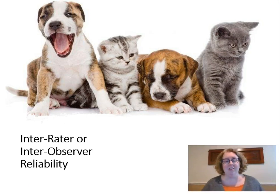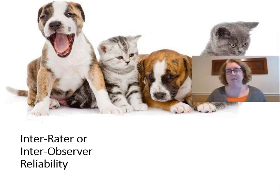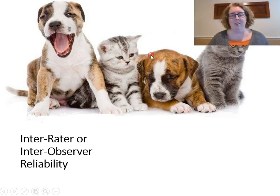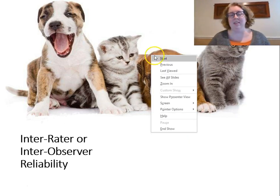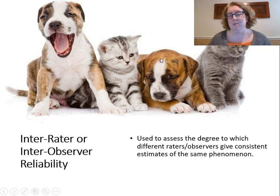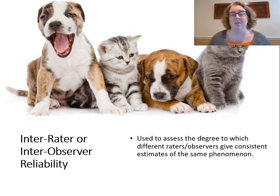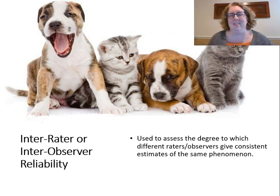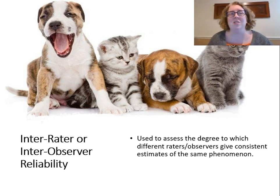When we talk about inter-rater or inter-observer reliability, we're talking about the consistency of scores across observers. Do the people who are rating the test get similar or the same results? Think about the Olympics — judging ice skating or gymnastics — and there's always that one judge who gives an off score. We'd like to see that all of those judges are giving similar scores: that we have high inter-rater reliability.